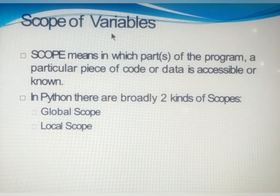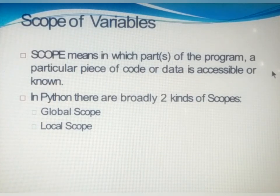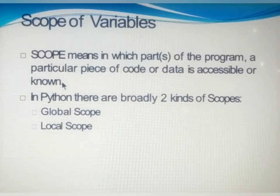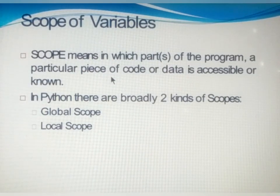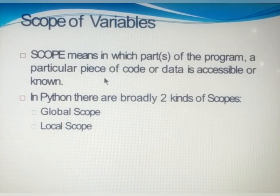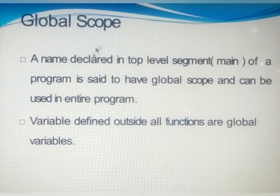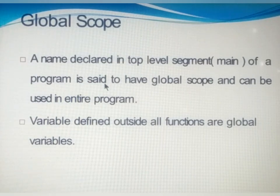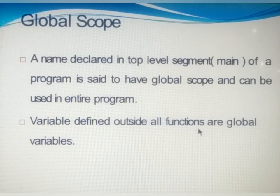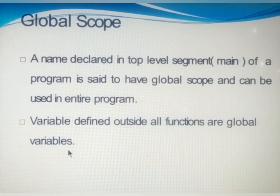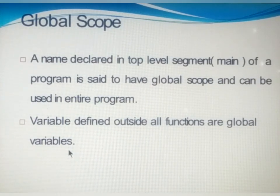Scope of variables. Scope means in which parts of the program a particular piece of code or data is accessible. In which whole area a particular variable is accessible is known as its scope. In Python, there are two kinds of scopes: global scope and local scope. Global scope means a name declared in top level statements of a program, and a global scope variable can be used inside the entire program.